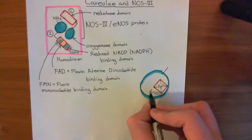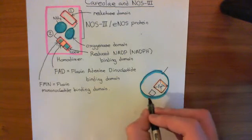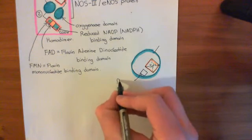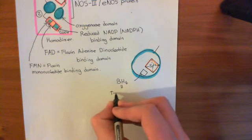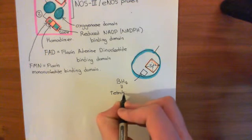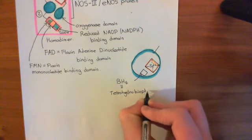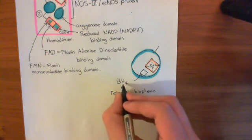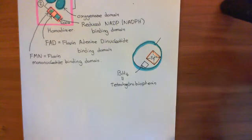We've also discussed how an important cofactor that binds to the oxygenase domain is BH4, which stands for tetrahydrobiopterin — biopterin with four hydrogens added to denote 'tetrahydro.' So that's a more in-depth look at the structure of NOS3.